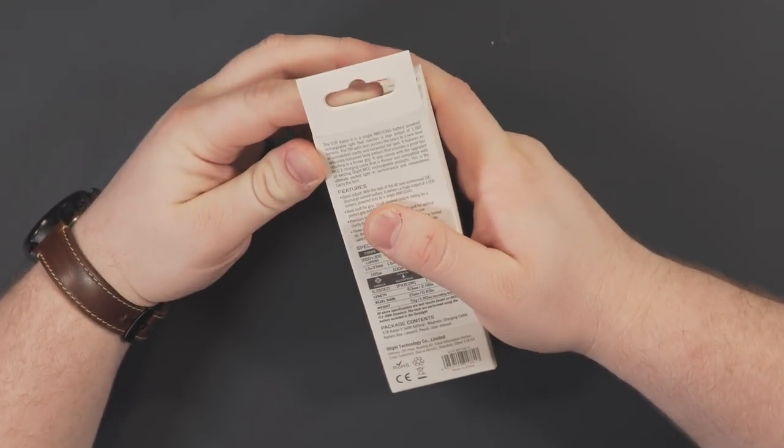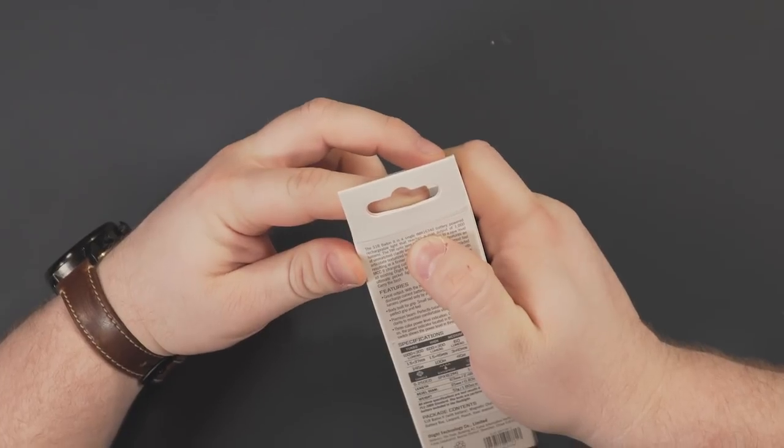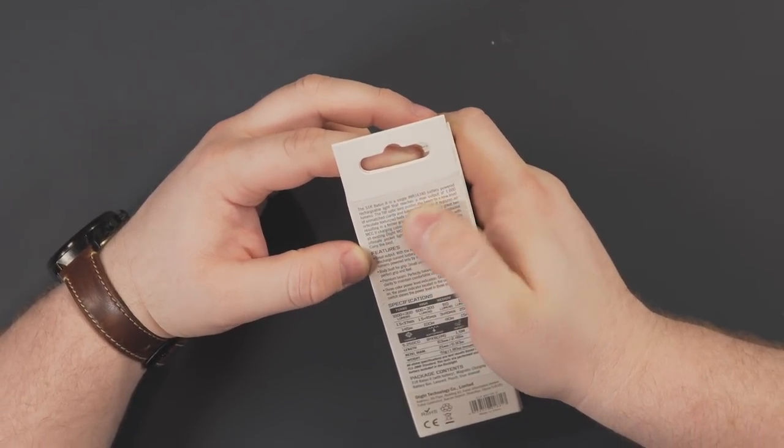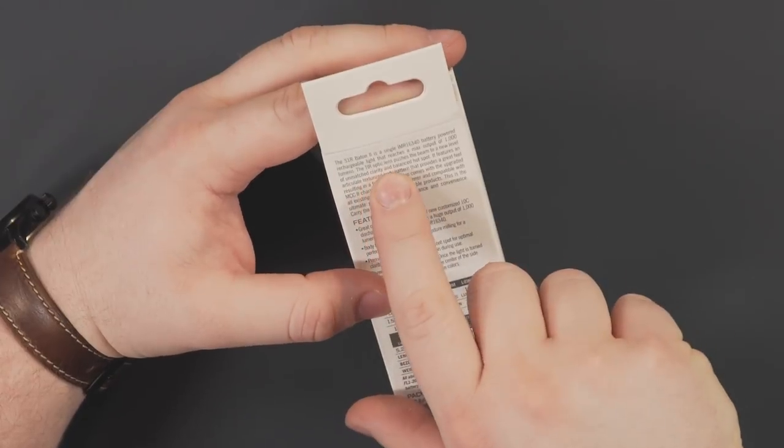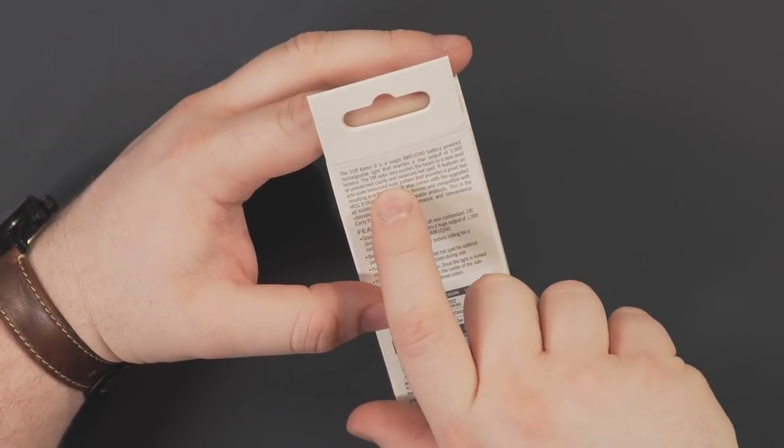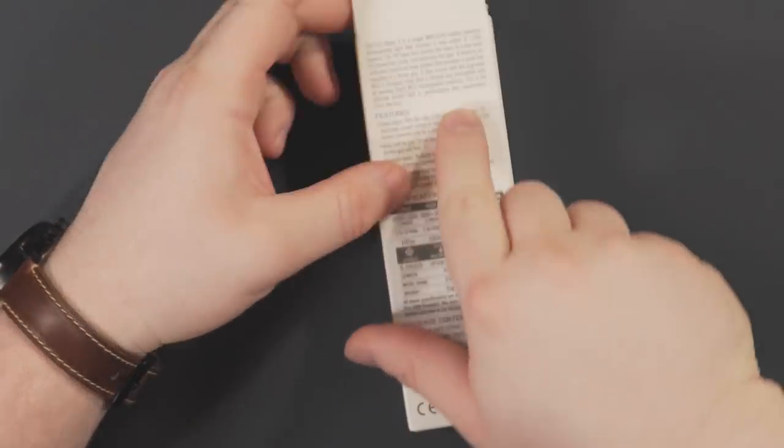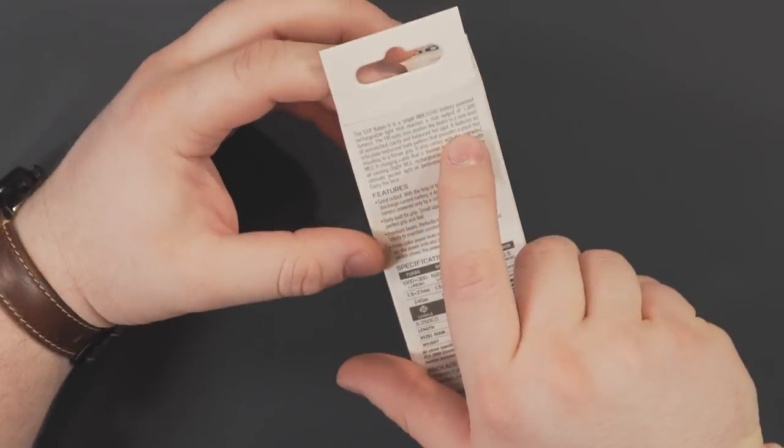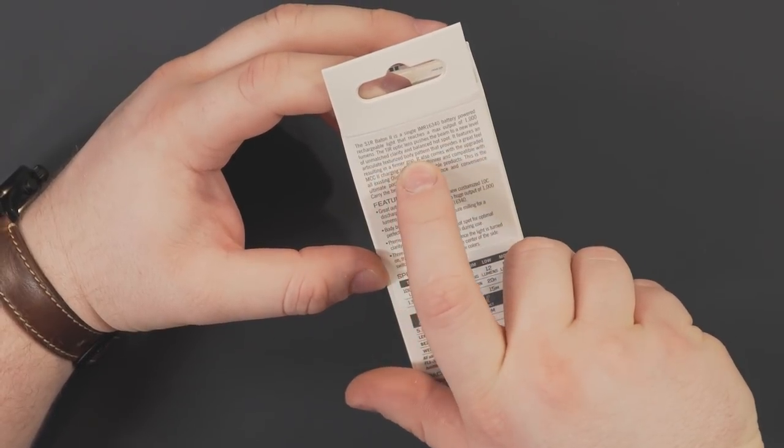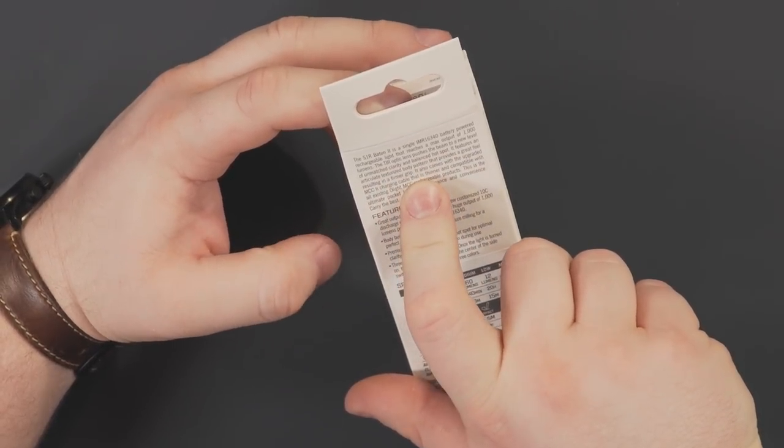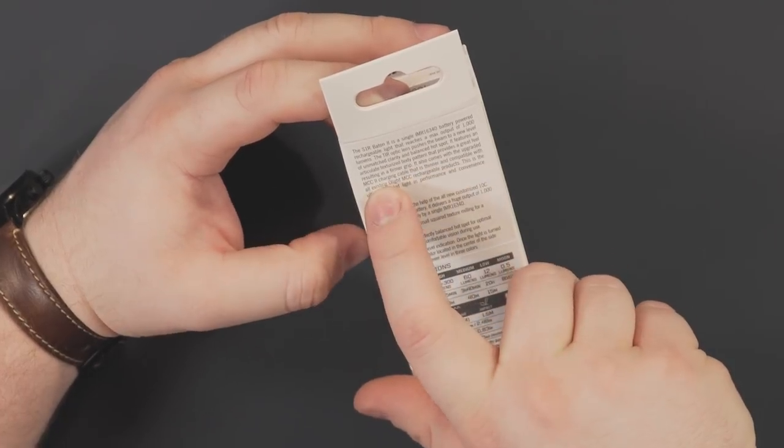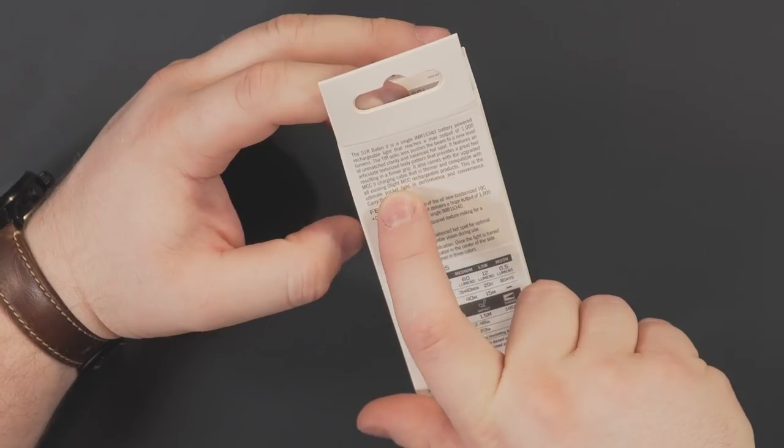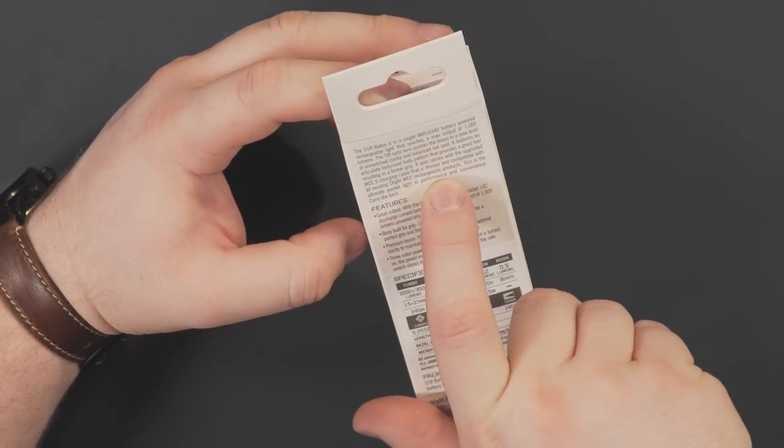The S1R Baton 2 is a single IMR 16340 battery-powered rechargeable light that reaches a max output of 1,000 lumens. The TIR optic lens pushes the beam to a new level of unmatched clarity and balanced hotspots. It features an articulate texturized body pattern that provides a great feel resulting in a firmer grip. It also comes with the upgraded MCC 2 charging cable.